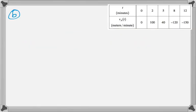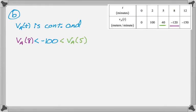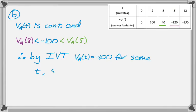Part B asks us if the table supports the conclusion that the train's velocity is negative 100 meters per minute at some time between 5 and 8, and we need to give a reason. I'm going to say that velocity is definitely continuous, and we know that V of 8 is negative 120, and V of 5 is 40. Since the function is continuous and it goes from negative 120 to 40, it definitely passes negative 100. So V of 8 is less than negative 100, which is less than V of 5, and therefore, by the intermediate value theorem, or IVT, V of T is definitely negative 100 for some T. We don't know what value of T, but we definitely know what happens, and that's all the question asked.